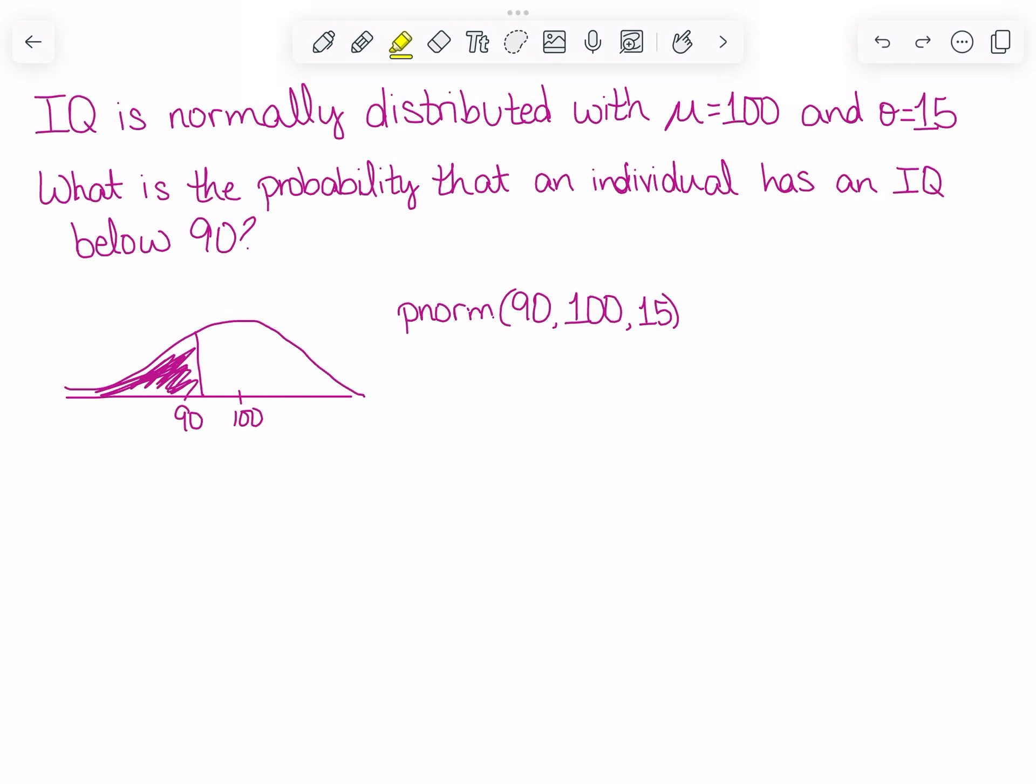Since for this particular problem I'm looking at an individual, my sample size is just 1. So I don't have to divide by the square root of the sample size, since that would be dividing by 1. This is just a normal distribution problem.